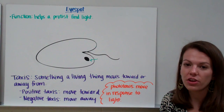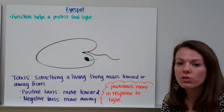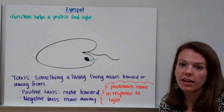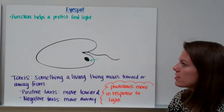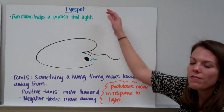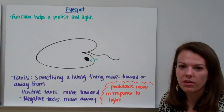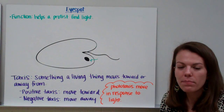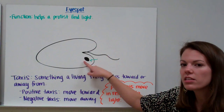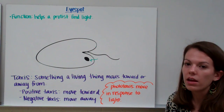Our last adaptation is called the eye spot, and it is particularly important for protists that get their energy from the sun, using sunlight to make food through photosynthesis. An eye spot is not like an eyeball. Just like how you can close your eyes and find where the light is, a protist can use its eye spot to find light. It doesn't actually see things, but it can recognize light, and usually the protist will move towards the light.